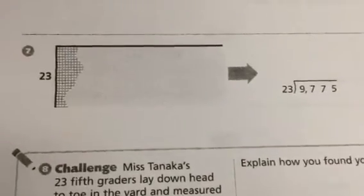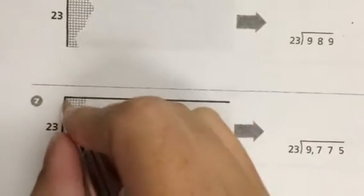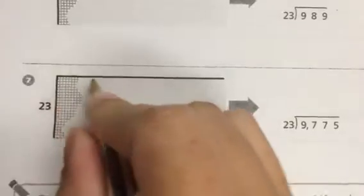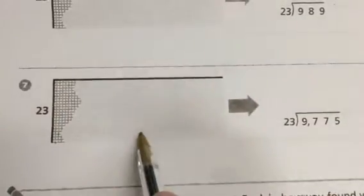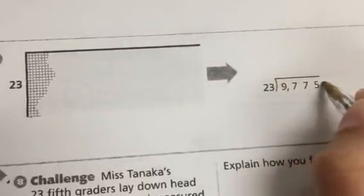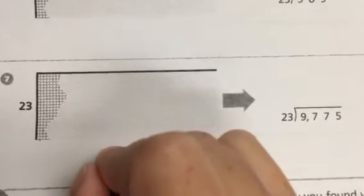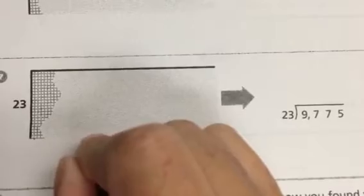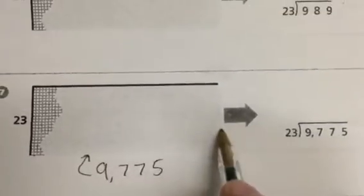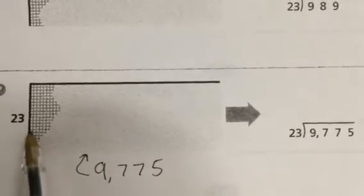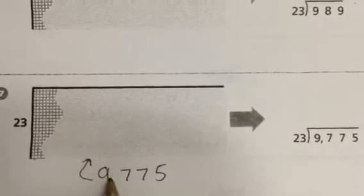So if you look at this part of an area model, there's 23 squares going down. I know if I have 23 times a number, it will give me my total inside that box. I'm actually dividing 9,775 by 23. So I want to have 9,775 inside this box right here. I need that many little tiny squares. How many columns would I need with 23 in each column to get me that many squares?